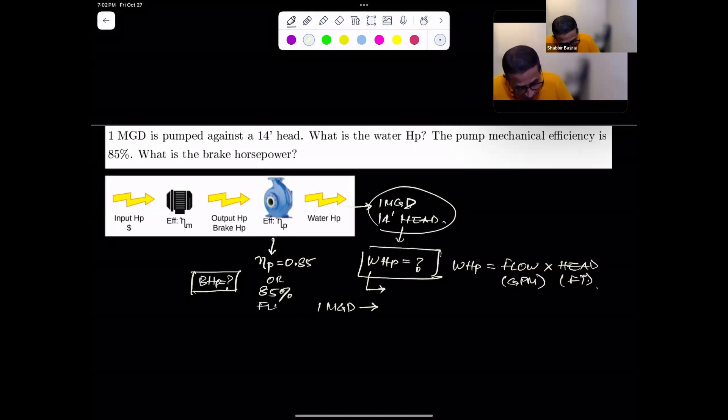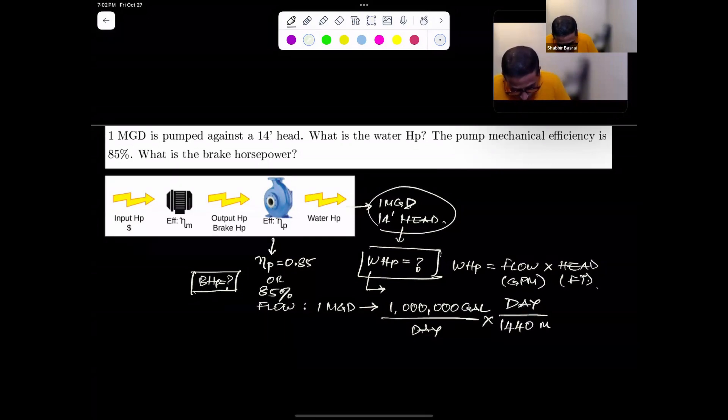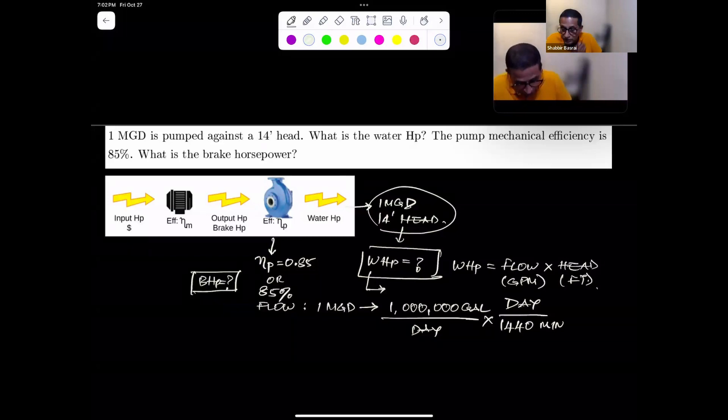Flow is 1 MGD, so 1 million gallons per day. And then you can make it into GPM. You're converting it. Per day, you have 1440 minutes. So this is your GPM.